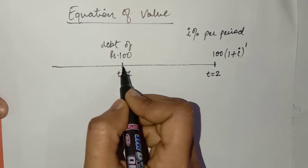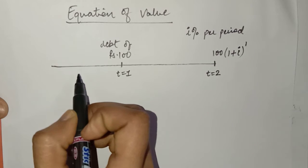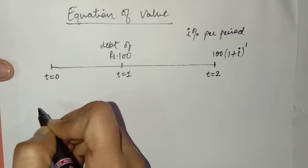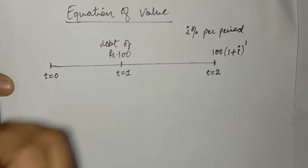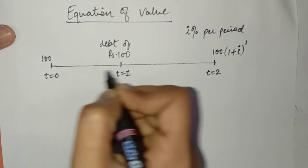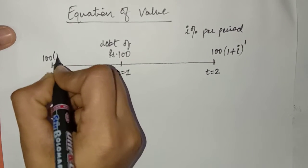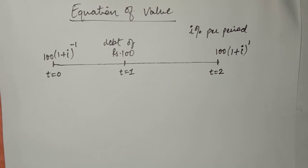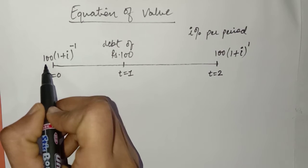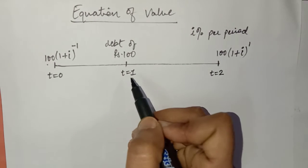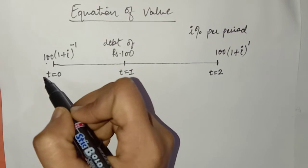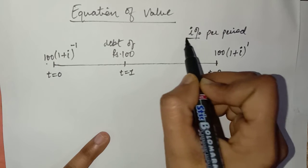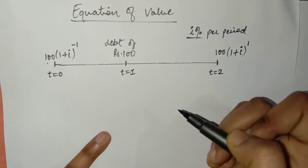Now, if I am not ready to make the payment when T is 1, that is on the due date, but rather I want to make the payment now, that is T equals 0. In this situation, we would not be ready to make a payment of Rs. 100. Rather, the worth of that Rs. 100 will be less today, and the value that we have to pay today will be Rs. 100 × (1 + I)^(-1). If we are making a payment at different points of time, it will not be the same value; it will be a different value because there is a time value of money at the rate of I% per period.